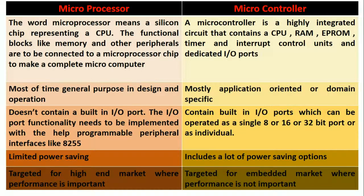A microprocessor doesn't contain a built-in I/O port, so the I/O port functionality needs to be implemented with the help of programmable peripheral interfaces like the 8255. Whereas a microcontroller contains built-in I/O ports which can be operated as a single 8-bit, 16-bit, or 30-bit port, or as individual ports.